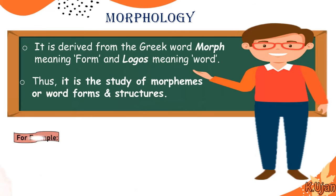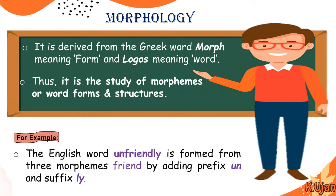For example, the English word unfriendly is formed from three morphemes: the word friend, by adding the prefix un and the suffix ly. So the word unfriendly is composed of the morphemes: friend, un, and ly.